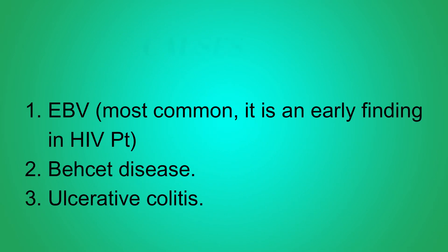Now what do you think it is? It is hairy leukoplakia. Why? Because it was a white patch with irregular margins and it was present on the side of the tongue. Now that you know it is hairy leukoplakia, let us discuss the causes. The most common cause for hairy leukoplakia is Epstein-Barr virus, and it is an early finding in HIV patients.